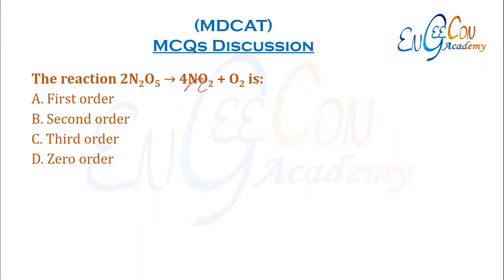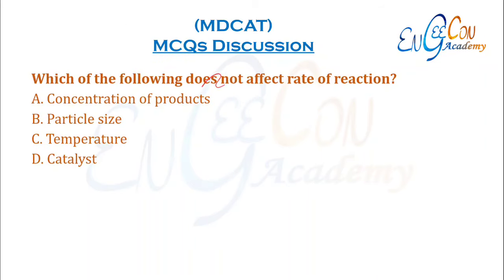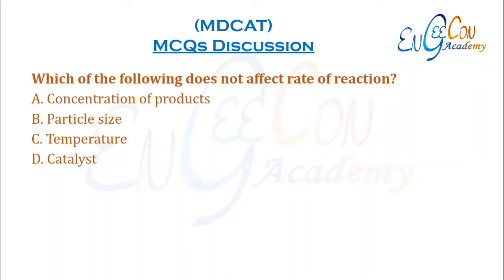The reaction 2N2O5 → 4NO2 + O2: the rate equation is R = k[N2O5]¹, so this is a first-order reaction. Which of the following does not affect the rate of reaction? Particle size, temperature, and catalysts all affect rate. Concentration of products does not affect rate — it is the concentration of reactants that affects it.